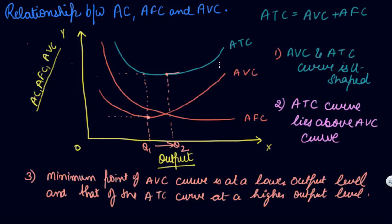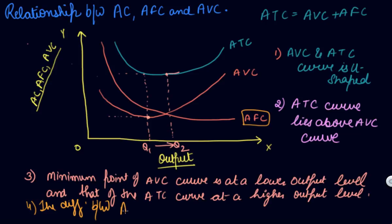As your output increases, the difference between the AVC and ATC curves keeps on decreasing. We have seen that as your output increases, your average fixed cost becomes almost parallel to the x-axis — it won't become negative or zero, but it approaches the x-axis. So the difference between your ATC and AVC will keep on reducing in the short run.